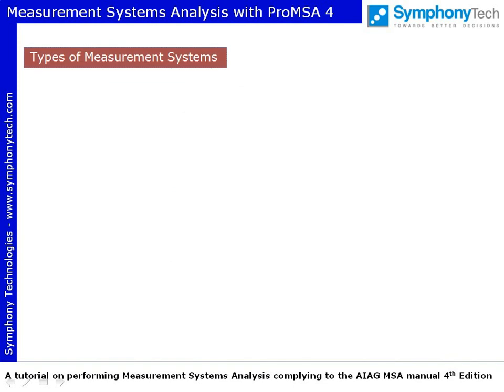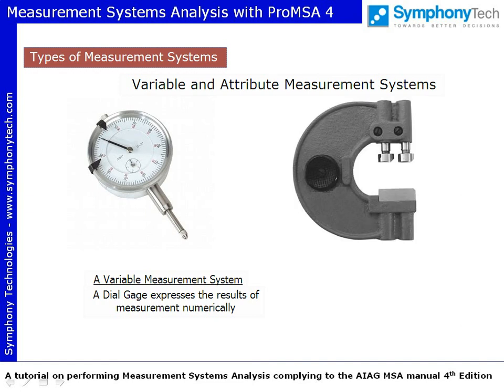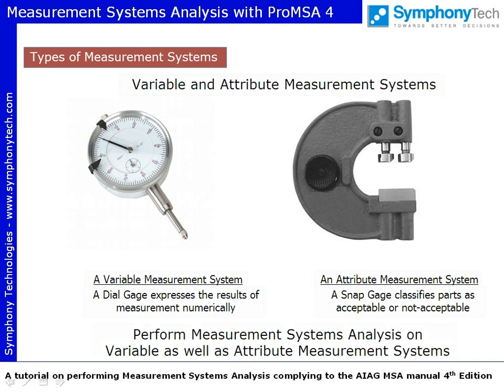There are two kinds of measurement systems: variable and attribute. Variable measurement systems measure part characteristics. Attribute measurement systems classify parts as acceptable or unacceptable. Perform measurement systems analysis on both variable as well as attribute measurement systems.